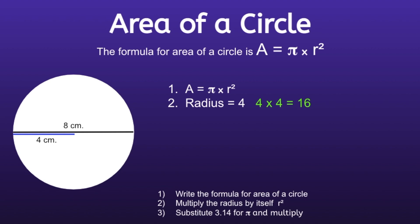This brings us to step three. Substitute 3.14 for pi and multiply. So we're going to replace the pi symbol with 3.14. And 3.14 times 16 is equal to 50.24. So the area of this circle will be 50.24 centimeters squared. So notice for this one there was a little trick in there. And that was to identify that they gave us the diameter instead of the radius. So be on the lookout for that.